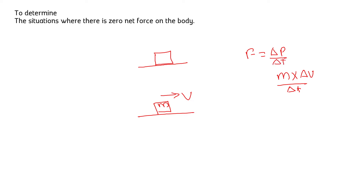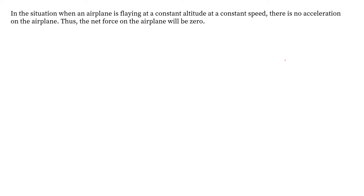In the first situation, an aeroplane is moving at a constant altitude with a constant speed, following a straight-line path. There is no change in direction and no change in speed, so the velocity is constant and hence the momentum of the aeroplane is constant.